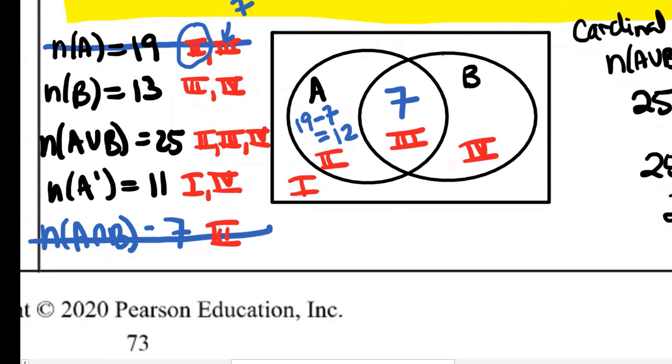We know that the whole set B has 13 in it. Seven of them were in region three, so the rest have to be in region four. So 13 minus seven leaves six that are in region four. Then we can cross that off our list.